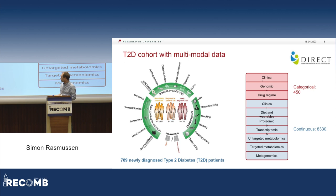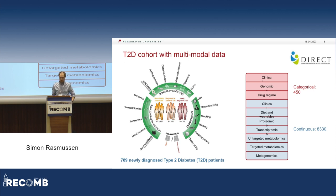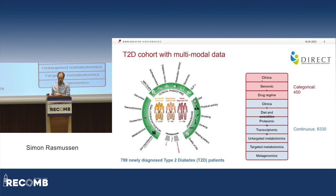Everything from genomics to the gut microbiome. We also had various clinical data — clinical measurements of blood, from scans, and also which drugs they had been using. And finally, we also had a lot of environmental data. This was for a total of almost 800 patients. We divided this into 10 different groups of data: three groups that were categorical with around 450 features, and around 8,000 features which were continuous across the different datasets.